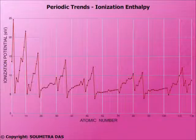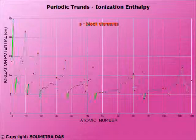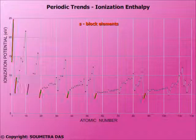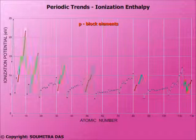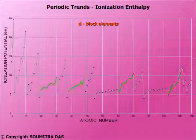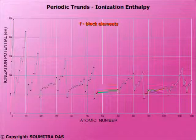The first ionization enthalpy versus atomic number curve is like this. The periodic nature is well understood. See the trend of the S block elements, the trend of the P block elements, the trend of the D block elements, and finally the trend of the F block elements.